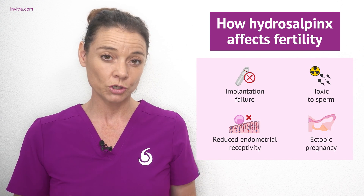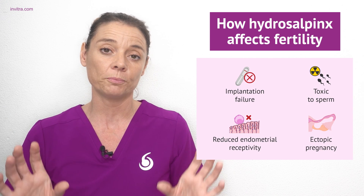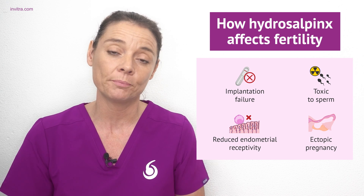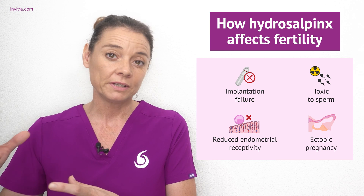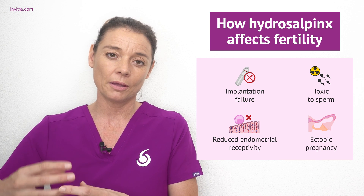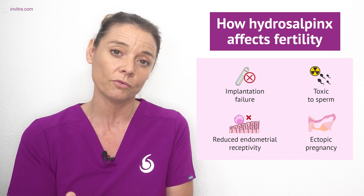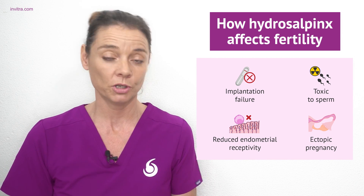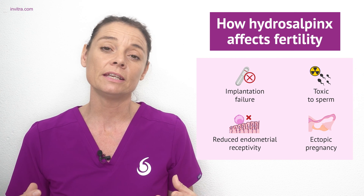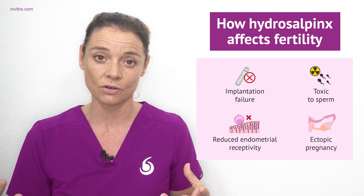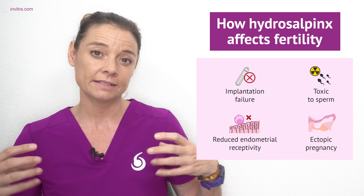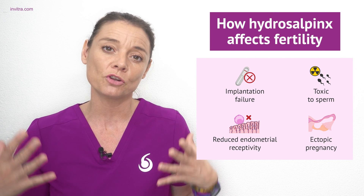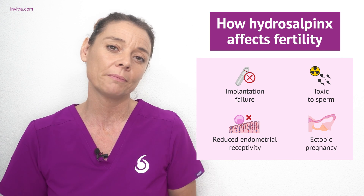Hydrosalpinx affects fertility in two ways. The first is the obstruction of the fallopian tubes, and the second is that the actual liquid inside the fallopian tubes can affect the development of the embryo itself. The liquid can also provide a mechanical action which prevents the movement of the embryo correctly to the uterus for implantation. This fluid can be toxic to sperm and can also contain antibodies which affect the implantation of the embryo. It has been shown that this accumulated fluid can also have a negative effect on the endometrium and block the expression of certain genes that are required for embryo implantation to occur.